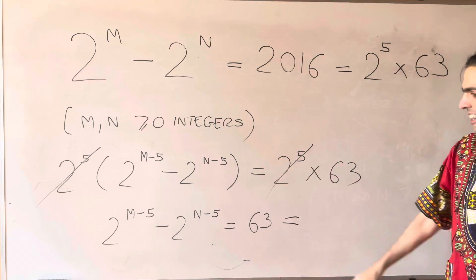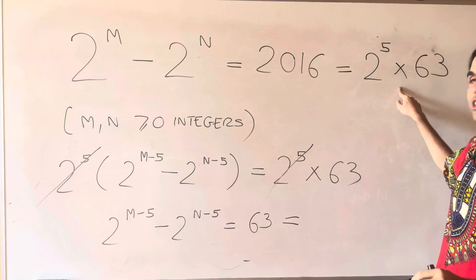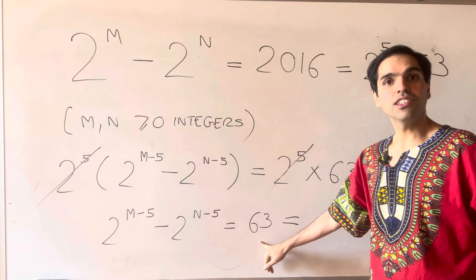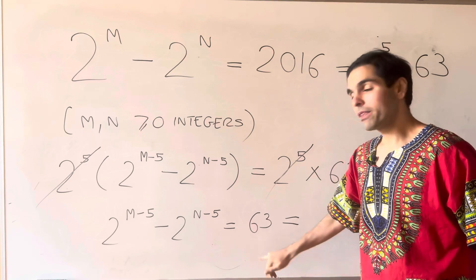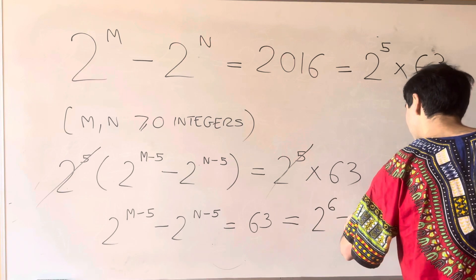And now the thing that really makes this work is that not only do we have this factorization, but also 63 is 1 less than a power of 2. Namely, it's 64 minus 1, so it's 2 to the 6th minus 1.